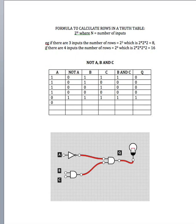Let's turn our A input OFF — that flips to 1 at the NOT output. We turn B to TRUE but C to OFF, so those are uneven and the AND gate output will be 0. We've got 1 and 0 feeding into our output Q, so that gives us 0.